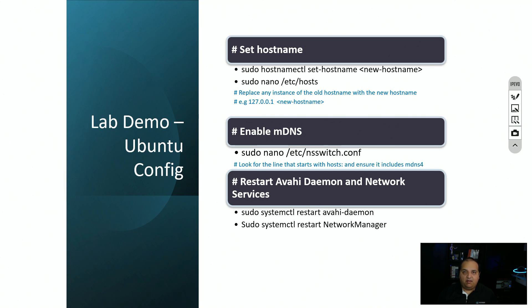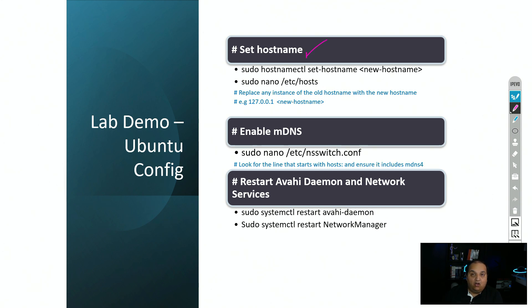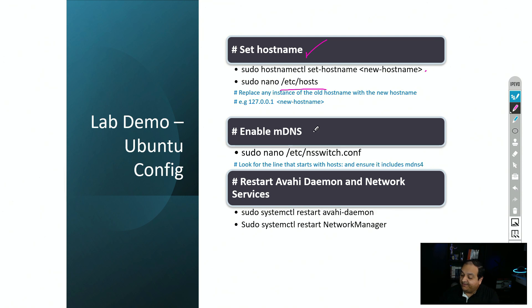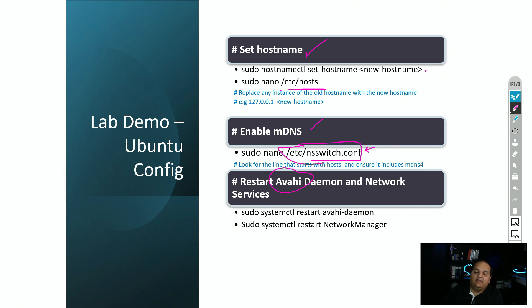To enable mDNS on an Ubuntu device we follow three steps. First, enable the hostname using the command 'sudo hostnamectl set-hostname' followed by the device name. Second, modify the /etc/hosts file to map 127.0.0.1 to the hostname.local domain. Third, edit /etc/nsswitch.conf — find the hosts row and after 'dns' add a space and type 'mdns4'. Finally, enable the Avahi daemon, which is the service that enables mDNS on that host.